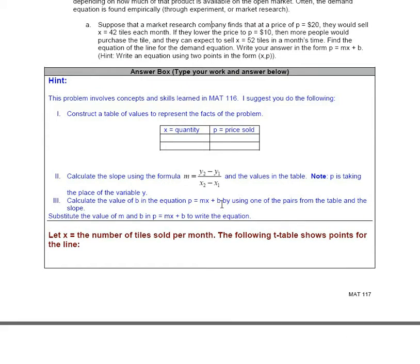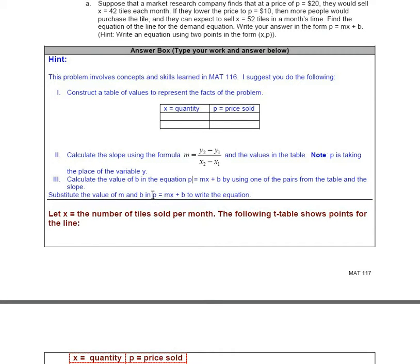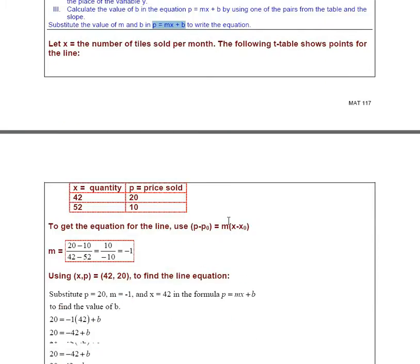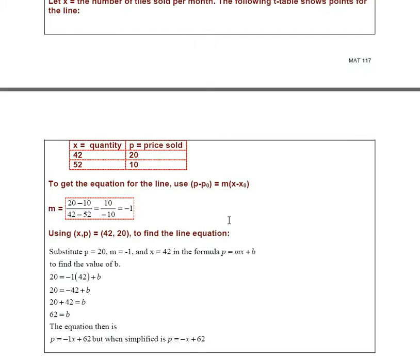One of the formulas you're going to need to type in Excel is the slope formula. Problem number one shows you how you find the demand equation, which looks like P equals MX plus B, and I show you the steps of how the equation was found. I suggest you do it first by hand, and once you understand what the problem is about, then you go to Excel and type in the formulas.